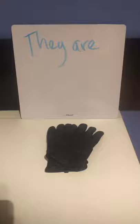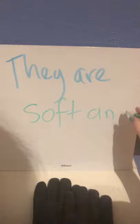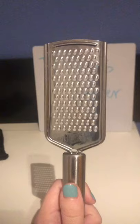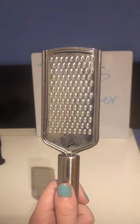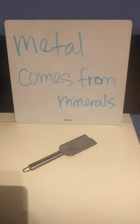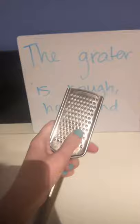Let's look at the gloves again. They are soft and flexible. The gloves are soft and flexible. Let's do one more example — a metal grater. This is a grater. It is made out of metal. Metal comes from minerals. The grater is rough, hard, and rigid.